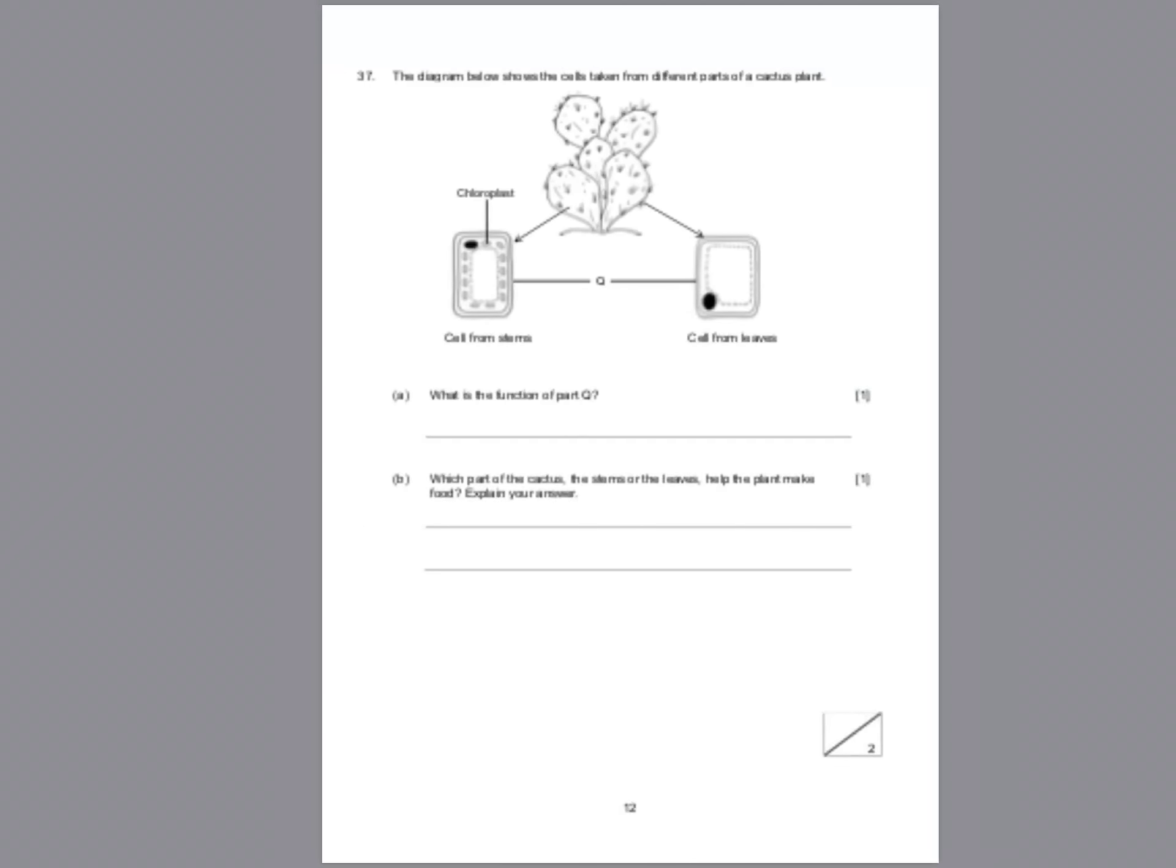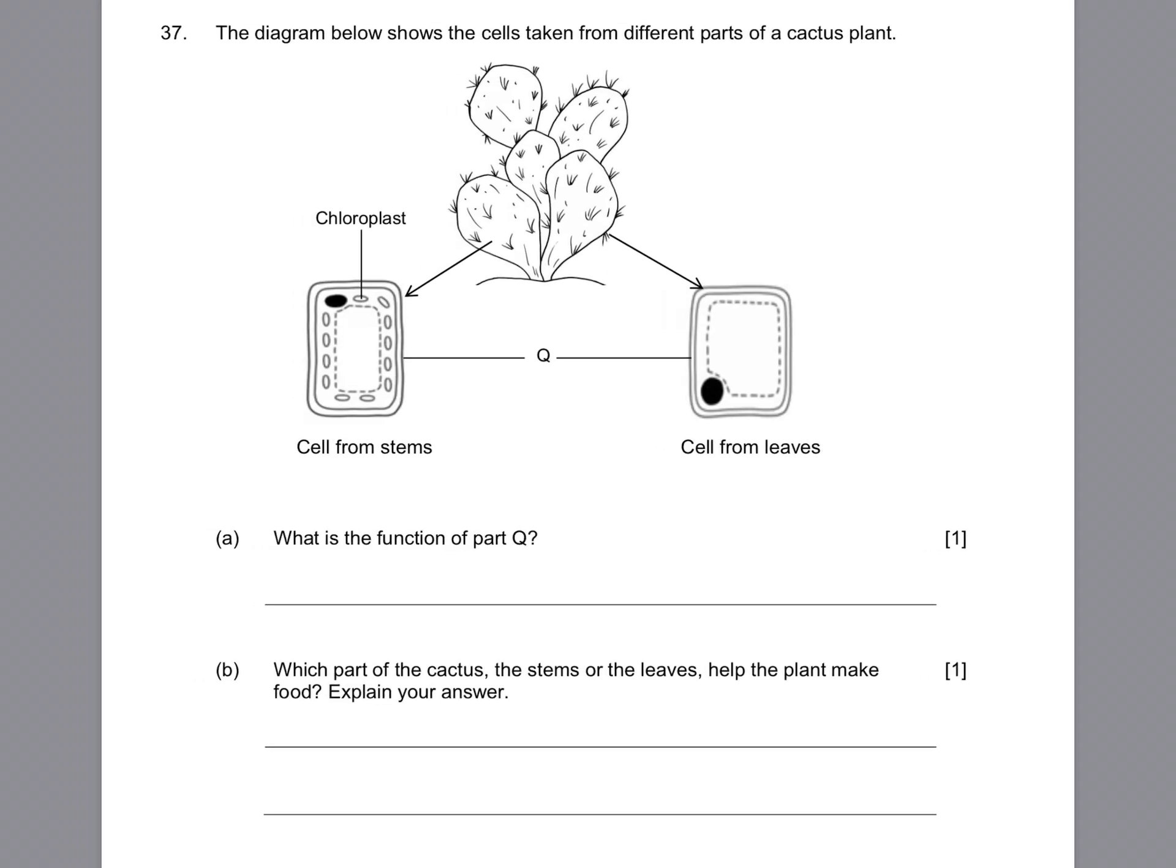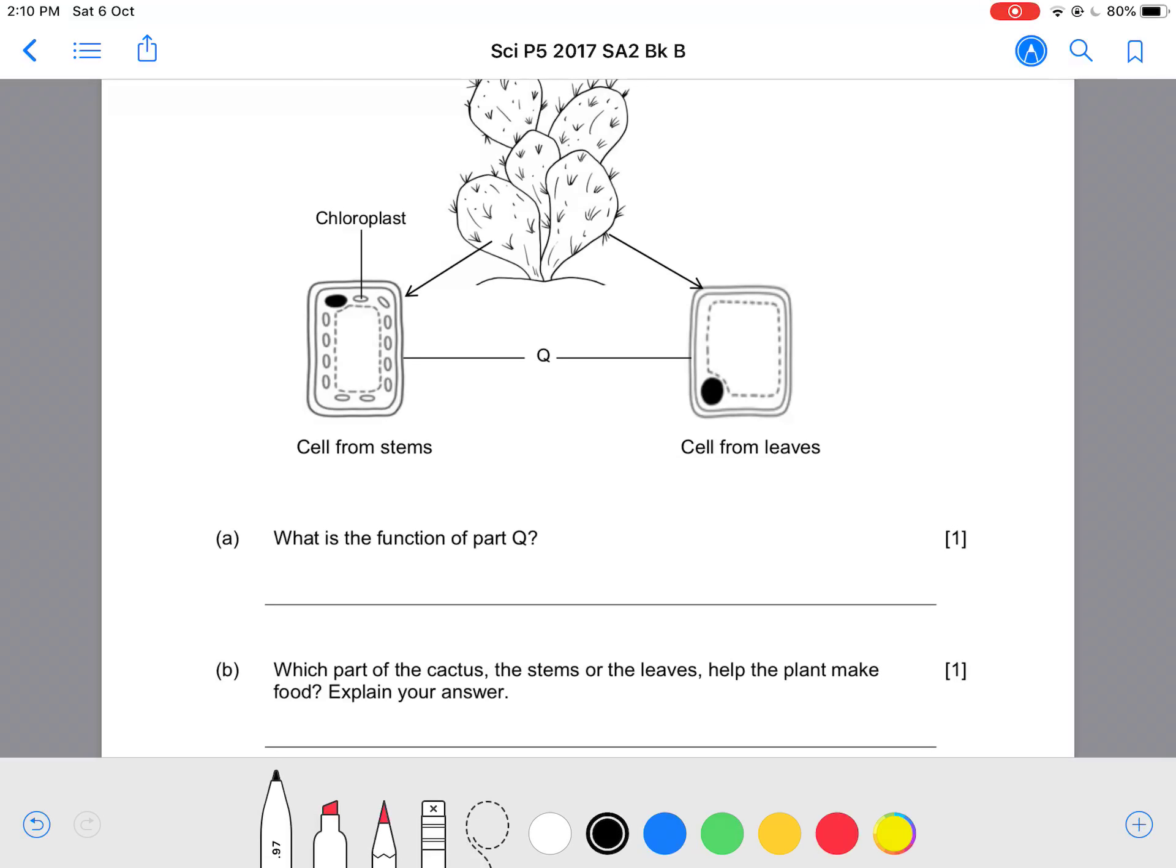Okay, question 37. Diagram shows the cells taken from different parts of the cactus plant. You have one that is taken from the stems, the other one taken from the leaves. What is the function of Q? Q is actually a cell wall. It's pointing towards the outer part of the cell. So what is the function of cell wall? It gives the cell or gives the plant its shape. That's the purpose of the cell wall.